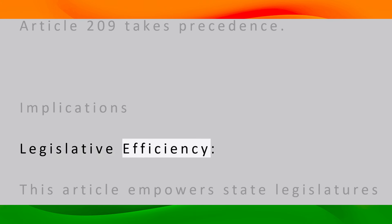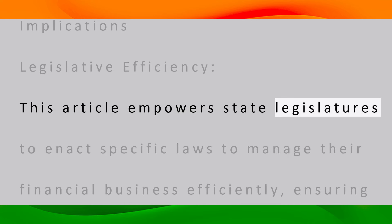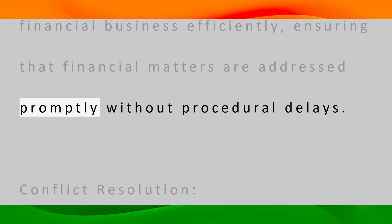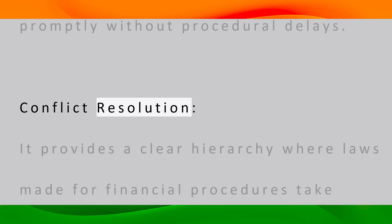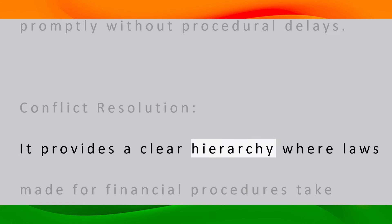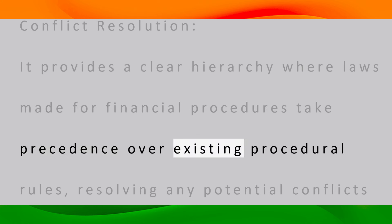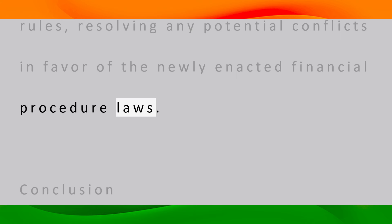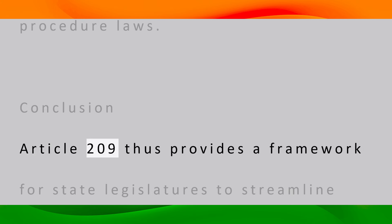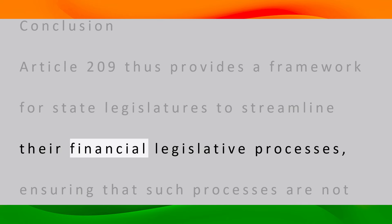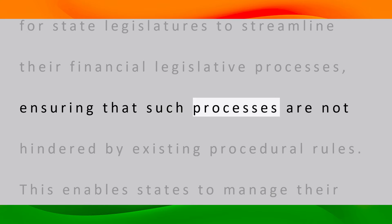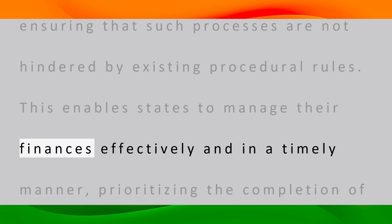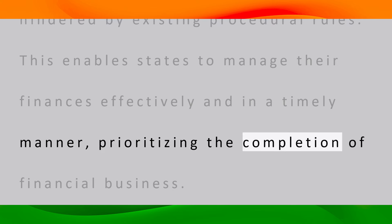This article empowers state legislatures to enact specific laws to manage their financial business efficiently, ensuring that financial matters are addressed promptly without procedural delays. It provides a clear hierarchy where laws made for financial procedures take precedence over existing procedural rules, resolving any potential conflicts in favor of the newly enacted financial procedure laws. Article 209 thus provides a framework for state legislatures to streamline their financial legislative processes, enabling states to manage their finances effectively and in a timely manner, prioritizing the completion of financial business.